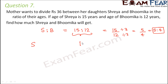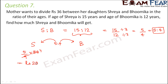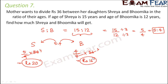The ratio is 5 is to 4 — that means had there been a total of 9 rupees, Shreya would have got 5 and Bhumika would have got 4. So in case there were 9 rupees total, Shreya would have got 5 out of 9 rupees. But the total amount is 36 rupees. So Shreya will get 5 by 9 into 36, which is rupees 20. Bhumika would get 4 by 9 into 36, which is rupees 16. So Shreya gets rupees 20 and Bhumika gets rupees 16.